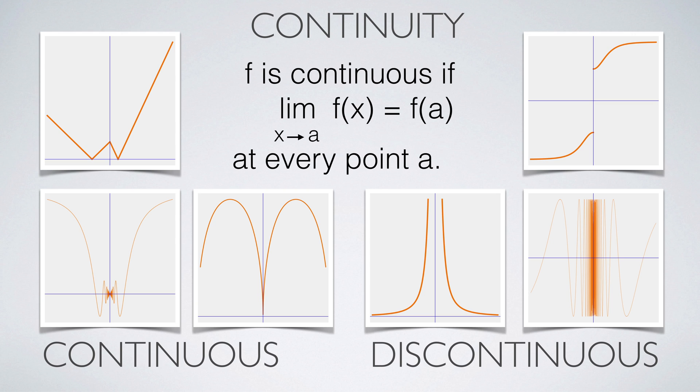A function f is continuous at a point a if f converges to f(a) as x converges to a. The function f is continuous if it is continuous at every point. To the left you see functions which are continuous; to the right we see three basic failures of continuity: a pole, a jump discontinuity, and an oscillatory discontinuity.